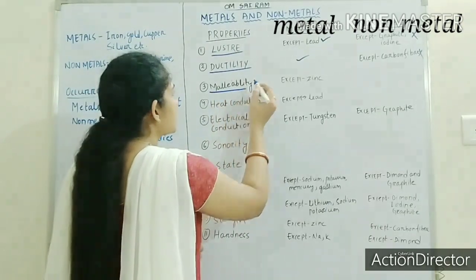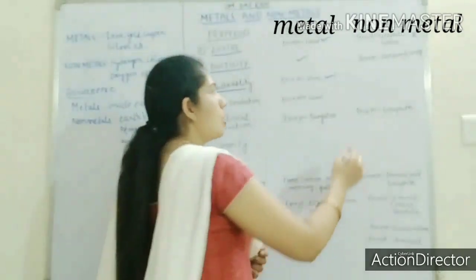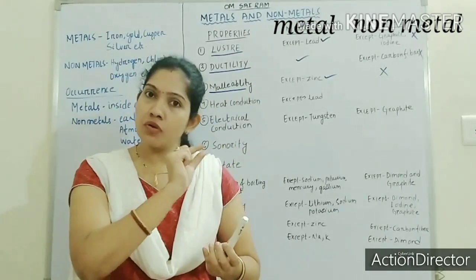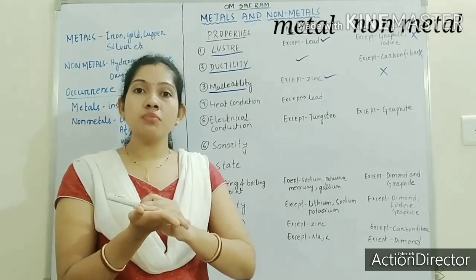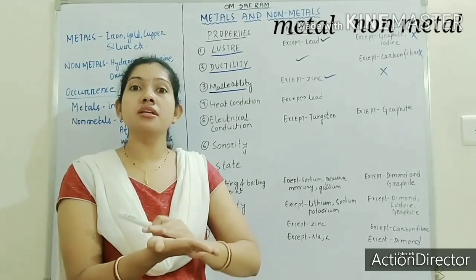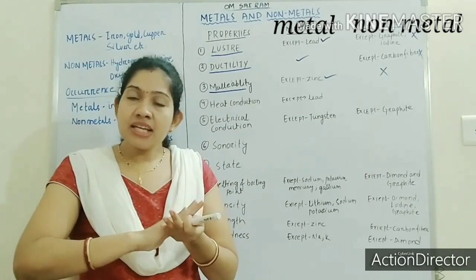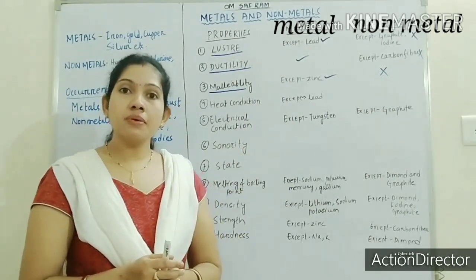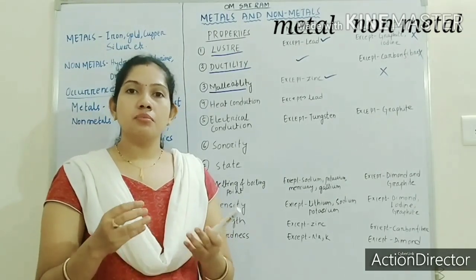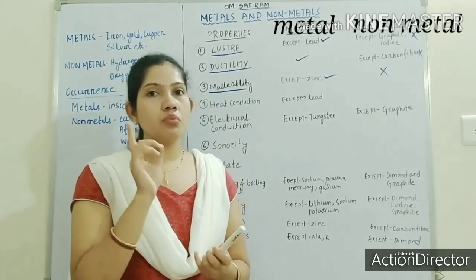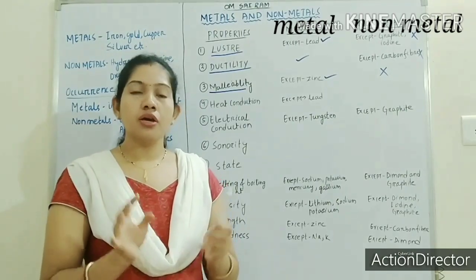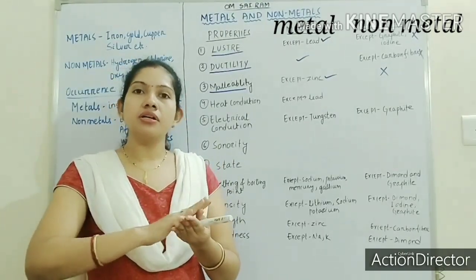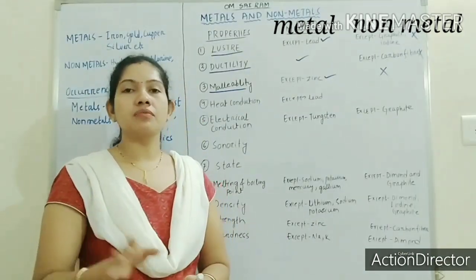Next is malleability. Metals are malleable but non-metals are non-malleable. Malleability means when it is beaten, it will form a thin sheet — just like paper. When metals are beaten they form a thin sheet rather than powder. Exception: zinc is a metal which cannot be made into a thin sheet — it converts to powder when beaten. Gold is the most highly malleable metal — when beaten it can be converted into a very thin sheet. Non-metals cannot be converted into thin sheets.